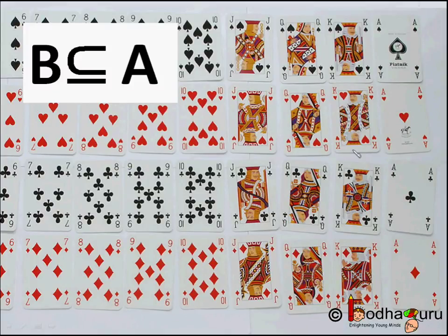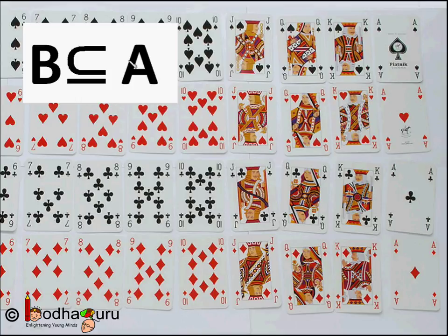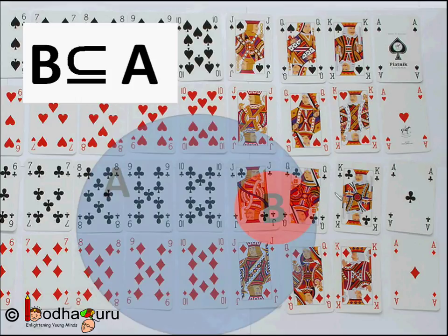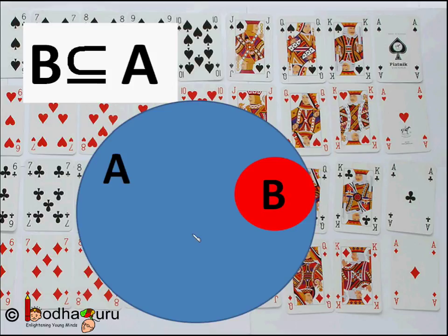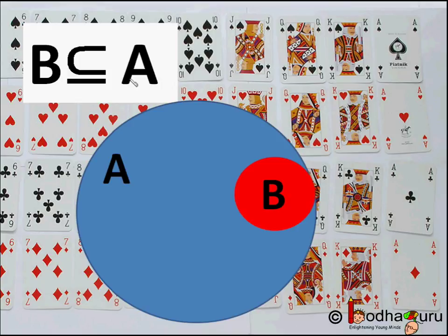To put it in a generic way, if all the elements of set B are in set A then we say set B is a subset of set A. We write it like this: B is a subset of A. Subset symbol is a small c with an underline below it. So B is a subset of A.